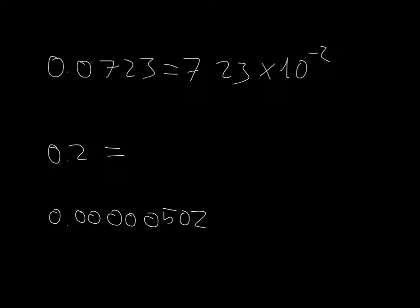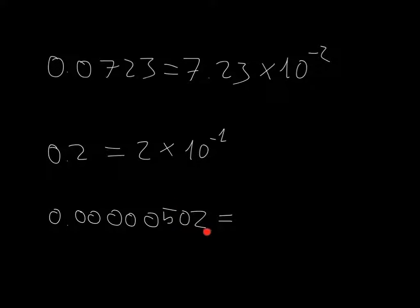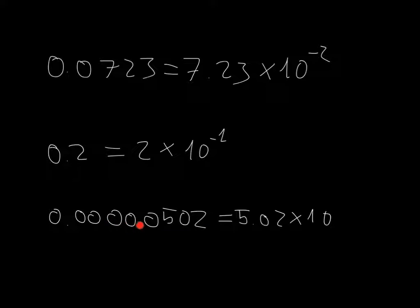And finally, for 0.000000502, I need to start with 5.02. Then let's count the number of times I have to move the comma: 1, 2, 3, 4, 5, 6. So it's 5.02 times 10 to the minus 6.